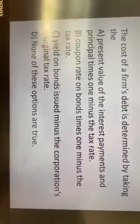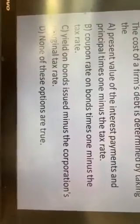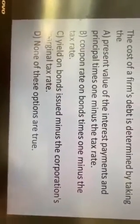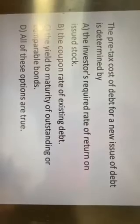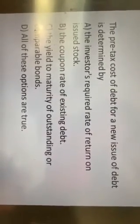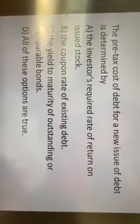It's pretty much a straightforward computation. Now let's have some theory. The cost of a firm's debt is determined by taking the yield on the bond issued minus the effect of the corporation's marginal tax rate — that is letter C. Remember, we are using the yield, not the nominal interest. The pre-tax cost of debt for a new issue of debt is determined by the yield to maturity of outstanding or comparable bonds.